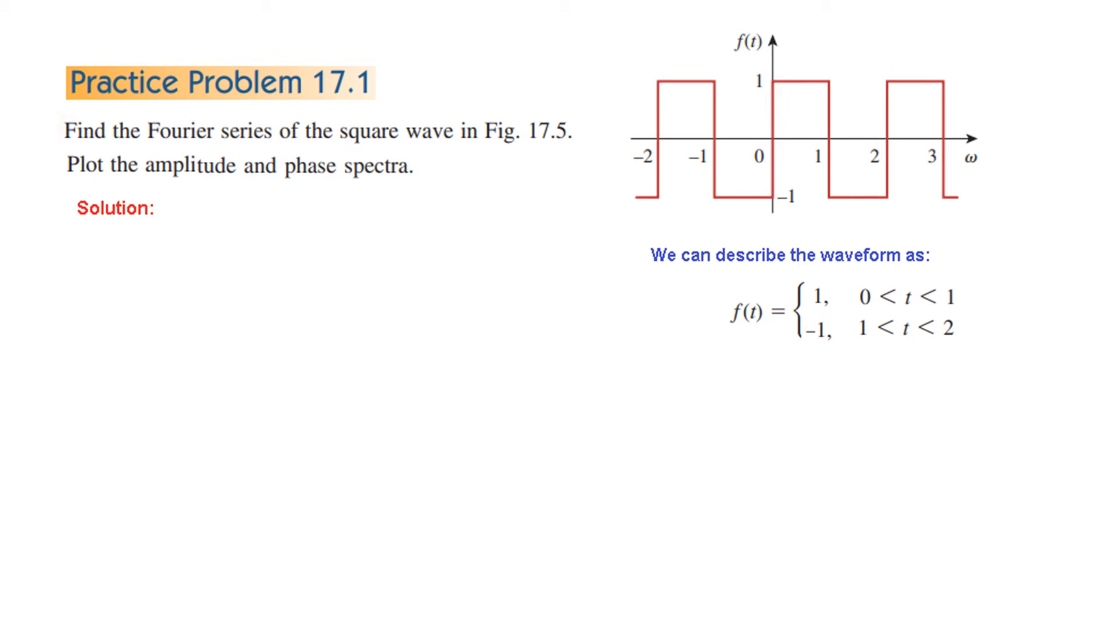So the period is 2. So time period is 2 and we know that omega in terms of radian is 2 pi f or 2 pi over T. So when we put T is equal to 2, this will become pi. So in our case, omega 0 or the fundamental frequency is pi.